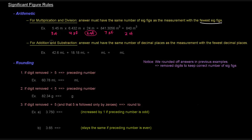For addition and subtraction, your answer must have the same number of decimal places as the measurement with the fewest decimal places — not sig figs, but decimal places. So if you have 42.6 milliliters and 18.18 milliliters, 42.6 has one decimal place and 18.18 has two. Your answer must have just one decimal place. The calculator gives 60.78, but you round that to 60.8 milliliters.